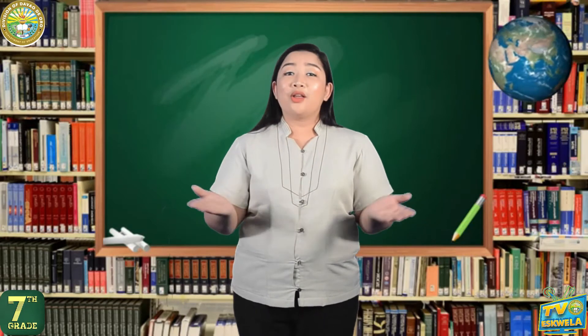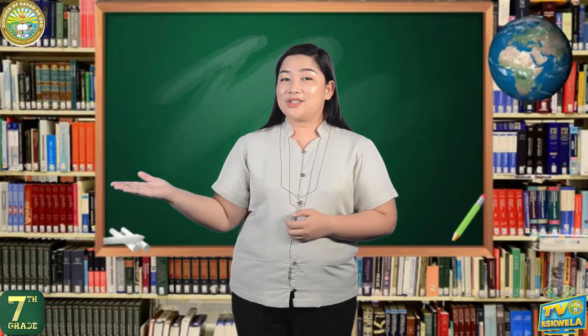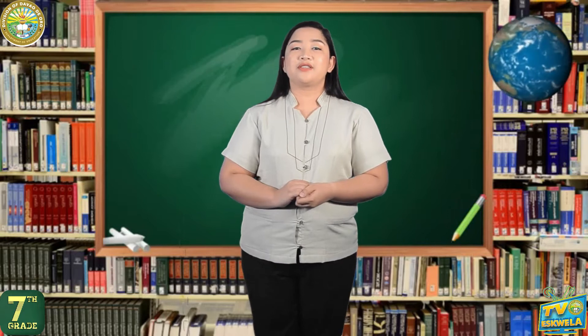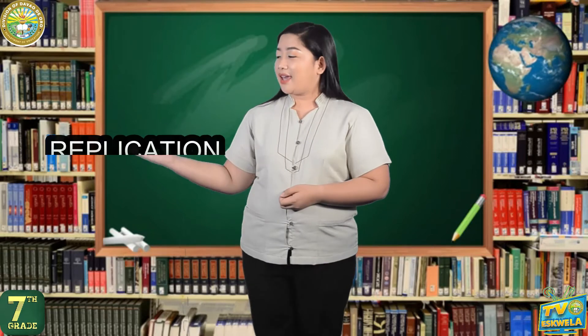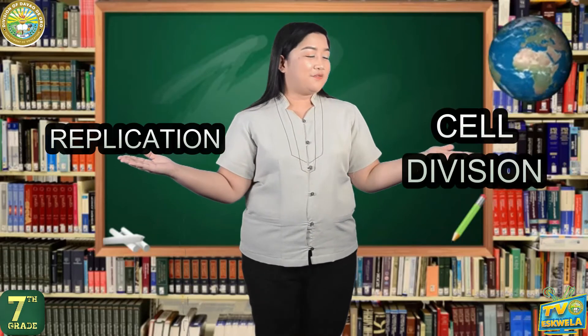All organisms, from ants to zebras, algae to trees, are basically alike. Their bodies are made up of cells. Located within the cell are minute organelles that have specific functions for the cell to be able to perform various cellular processes, including replication and cell division.